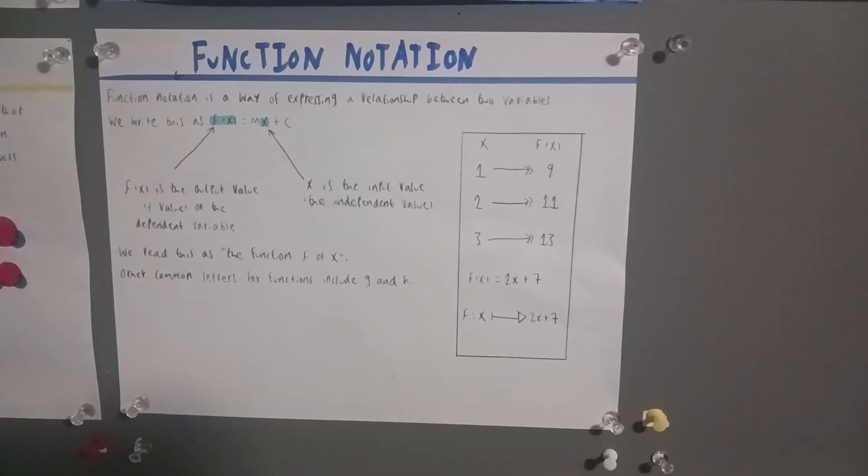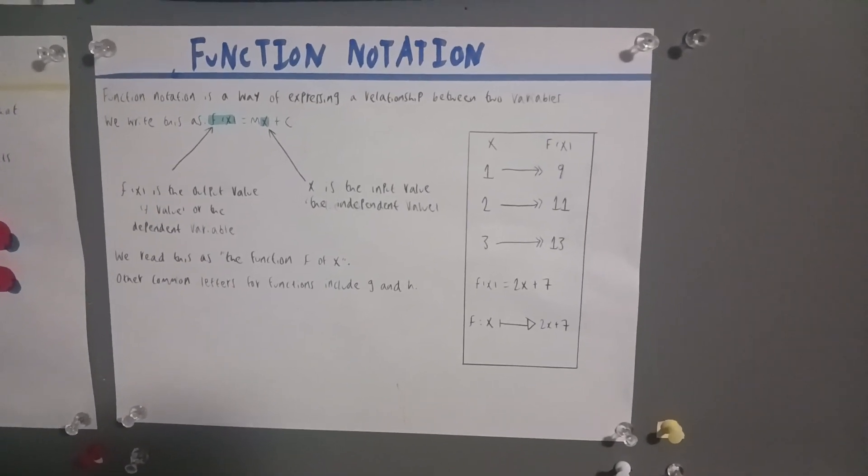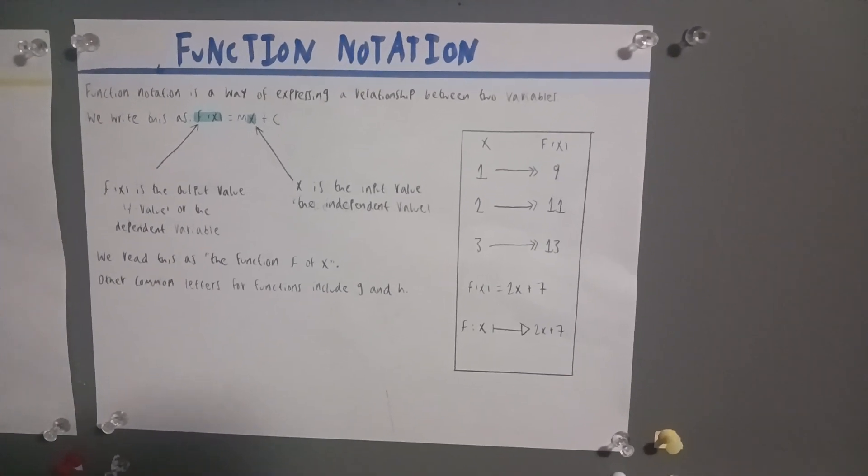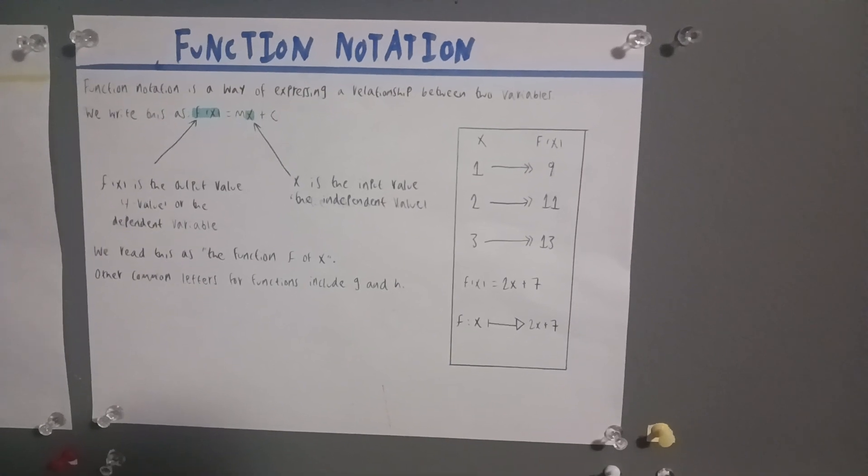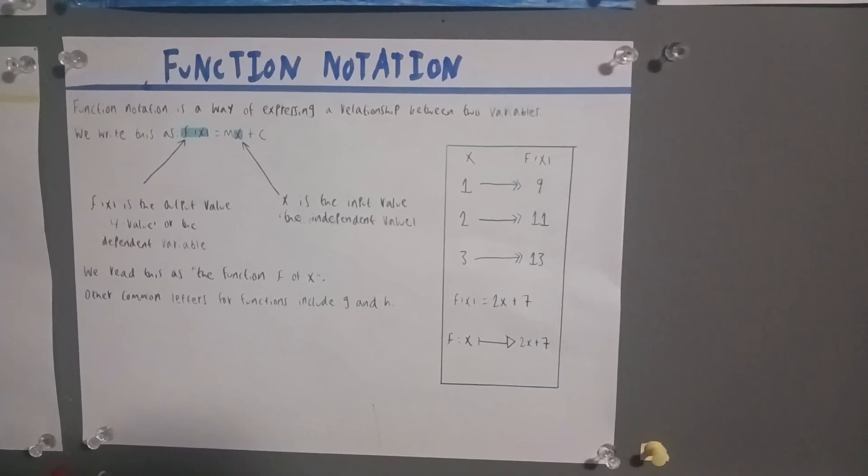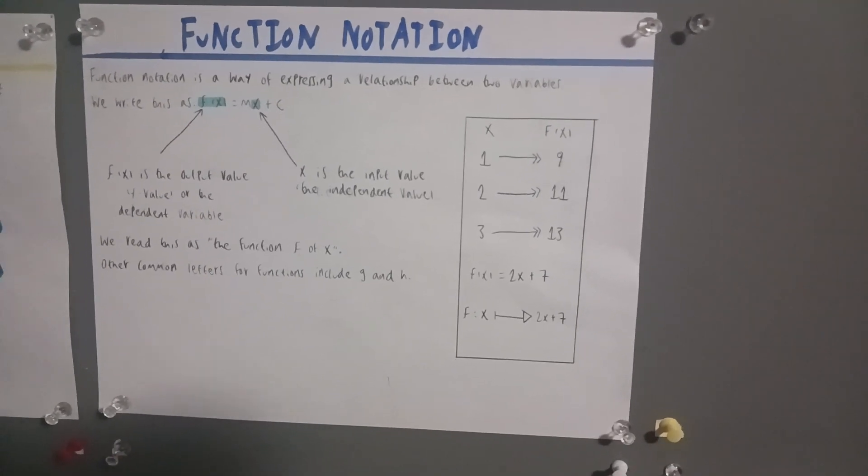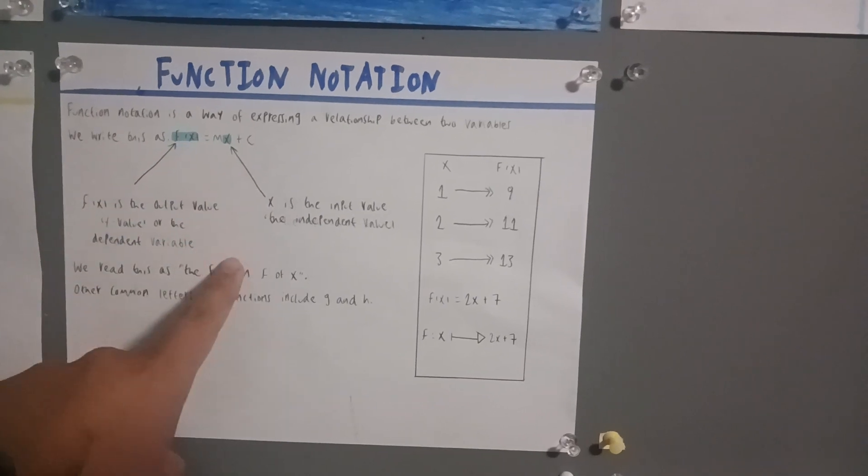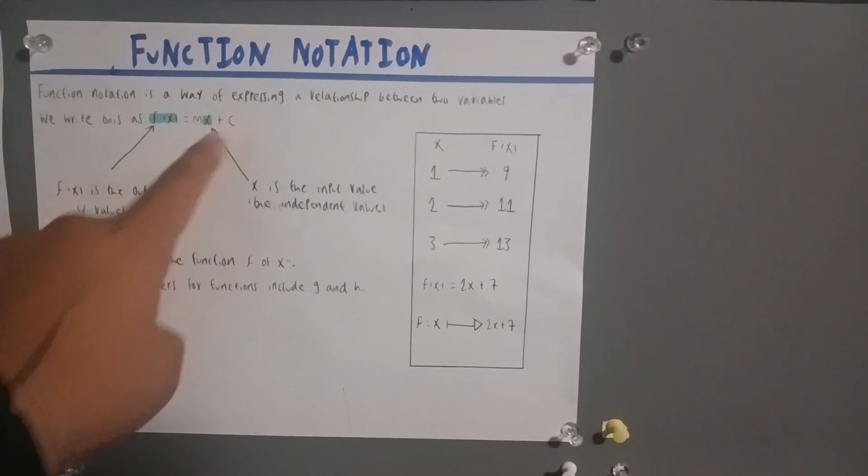Hi everyone, today we're going to talk about function notation. Function notation is a way of expressing a relationship between two variables. We write this as f of x is equal to mx.